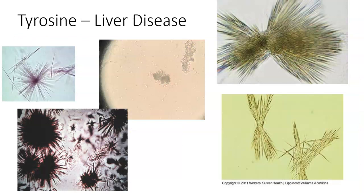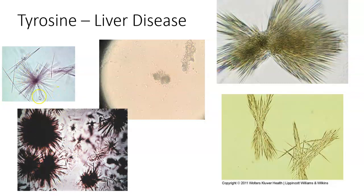Tyrosine crystals look like sheaves most of the time — like someone took a bunch of hay or needles and clamped them together in the middle with a rubber band to keep the bundle together. Sometimes they look like a ball with needles stuck all over the surface, but most of the time they're the little sheaves of crystals.